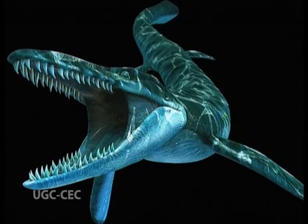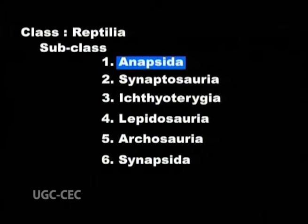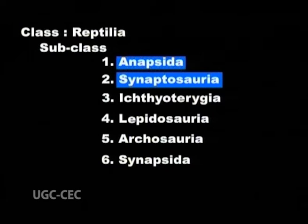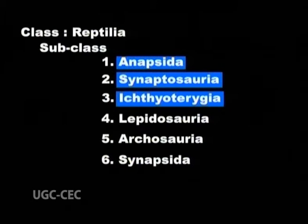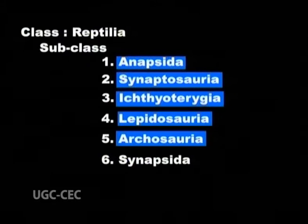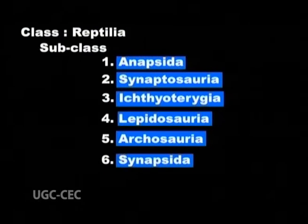Class Reptilia is classified into six subclasses: Subclass 1 Anapsida, Subclass 2 Synaptosauria, Subclass 3 Ichthyopteresia, Subclass 4 Lapidosauria, Subclass 5 Archosauria, and Subclass 6 Synapsida. Out of these, Synaptosauria, Ichthyopteresia, and Synapsida possess mostly extinct animals, whereas others have few examples of extinct or endangered animals. We will study them in detail.